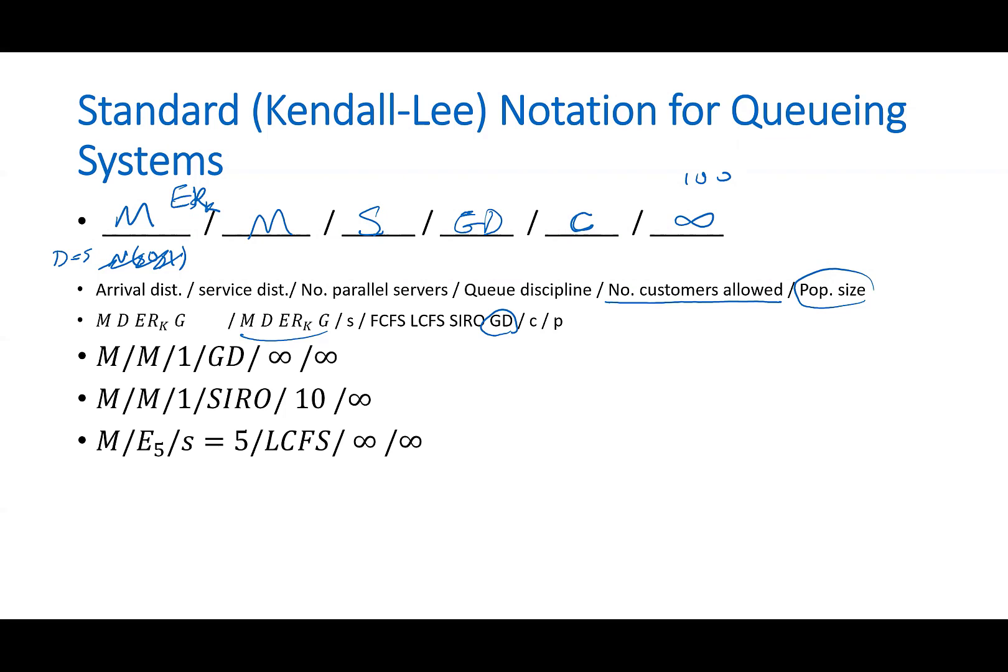Next one. It has also a memoryless or exponential arrival process, but the service process is Erlang with k equals 5. There are five servers, and last come first serve is the queueing discipline, the queue discipline, and no cap, infinite population size.